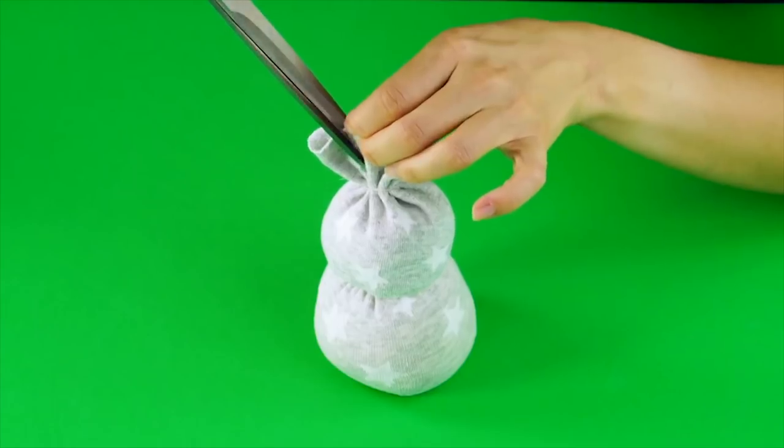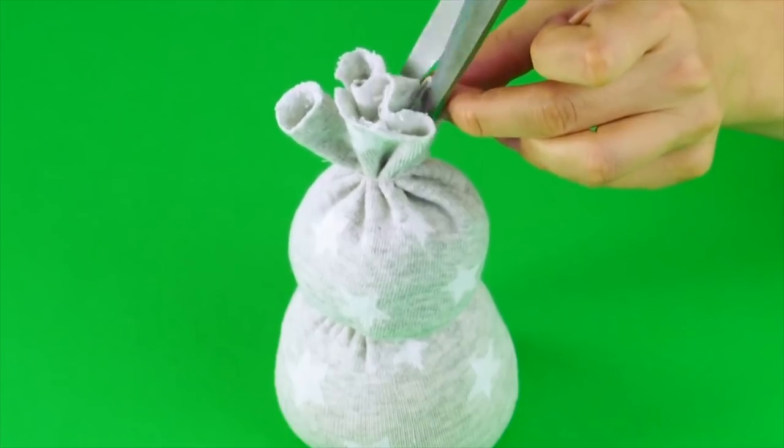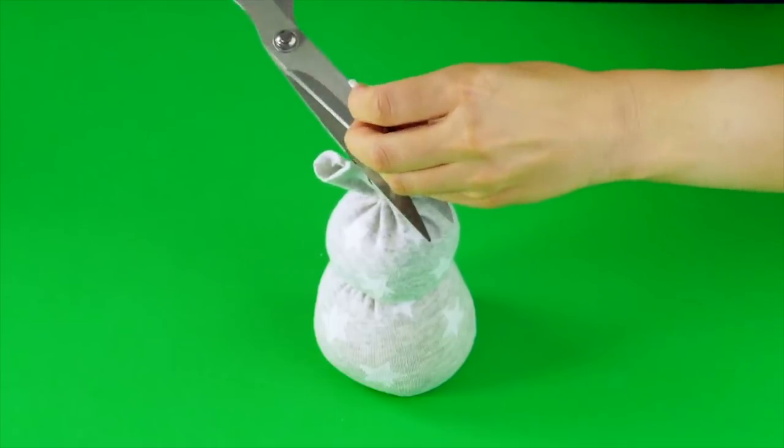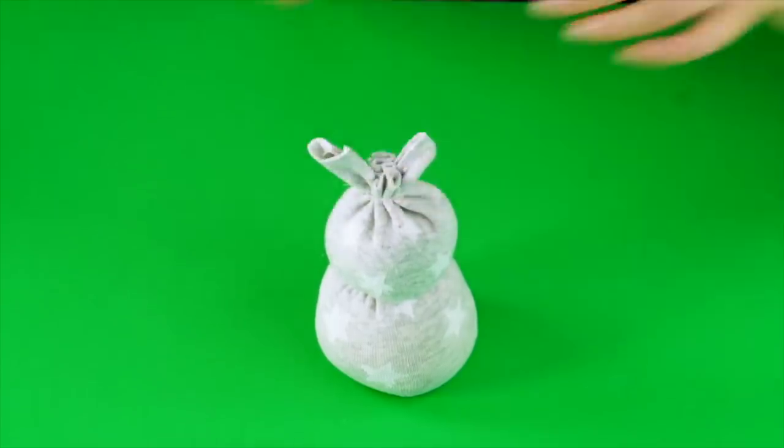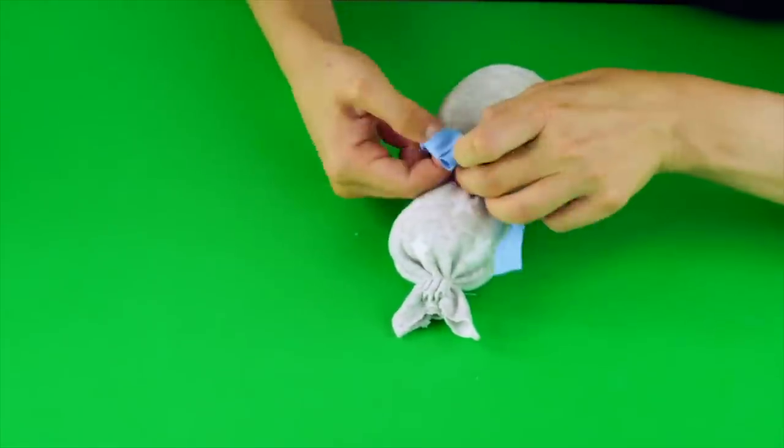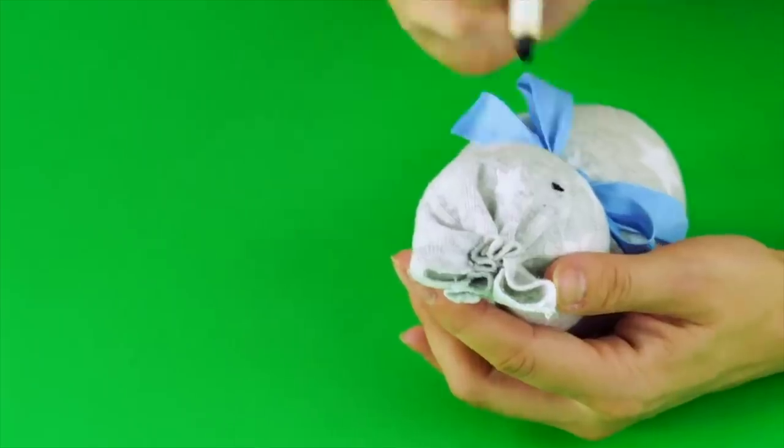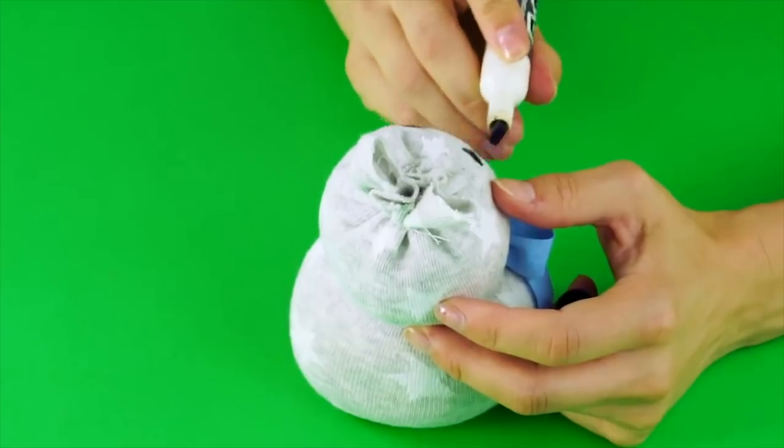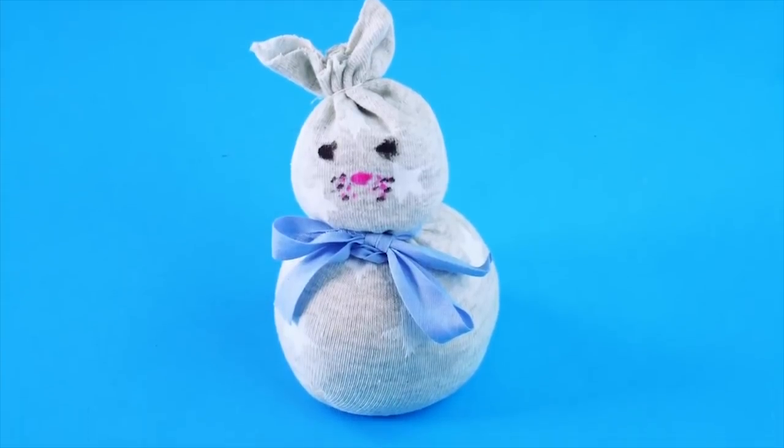Now make some bunny ears by cutting off any extra fabric from the top of the sock. Cut a V-shaped piece from the center to make two ears. Now it's time to decorate your bunny. Tie a ribbon around the neck for a dapper little bow tie, and draw on its face with a marker. Look how snuggly this chubby little guy is.